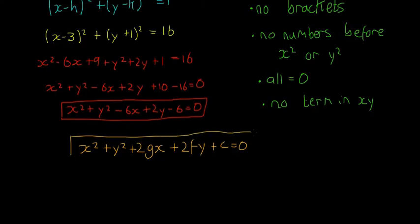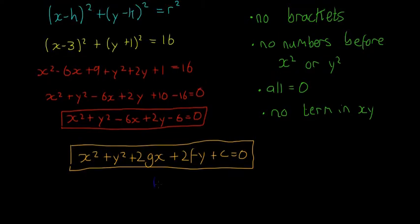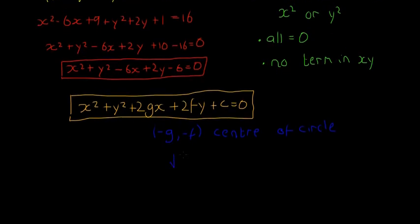That's the general form of the circle. In this case, minus g and minus f give the center of the circle. And you can find the radius of the circle by taking the square root of g squared plus f squared minus c.